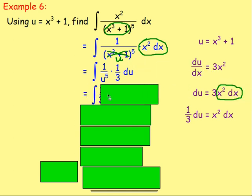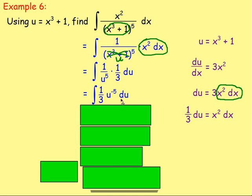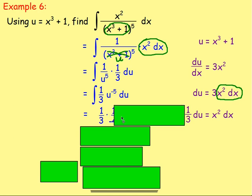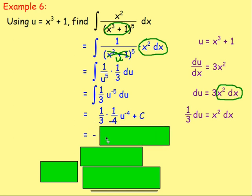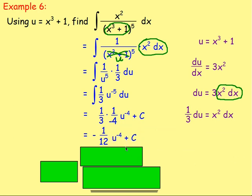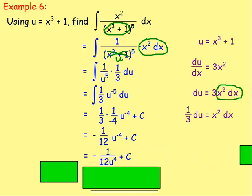After that, we know 1 over u to the power of 5 times 1/3 du. Rewriting: the integral of 1/3, and then 1 over u to the 5 moved to the top line as u to the negative 5, and don't forget du. Adding 1 to the power: 1/3 stays, u to the negative 5 becomes u to the negative 4, and we divide by negative 4, giving 1 over negative 4 times u to the negative 4. Then plus c. Tidying up: a third times 1 over negative 4 — bring the negative to the front — giving negative 1/12 u to the power of negative 4 plus c. Rewriting with a positive index: negative 1 over 12u to the power of 4 plus c.